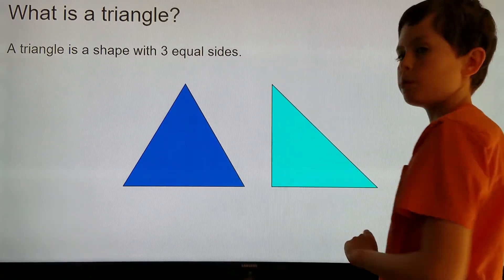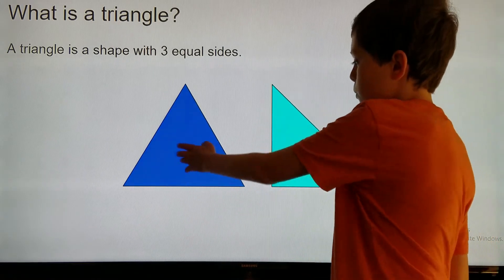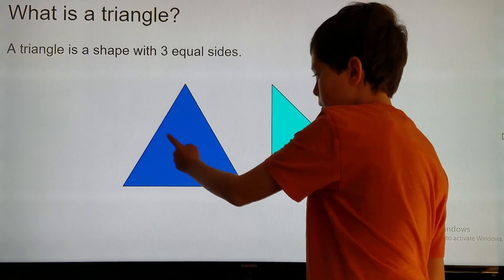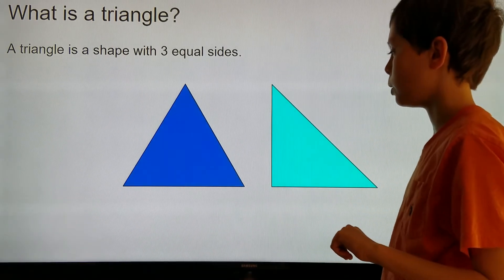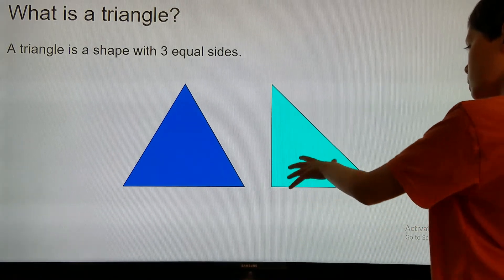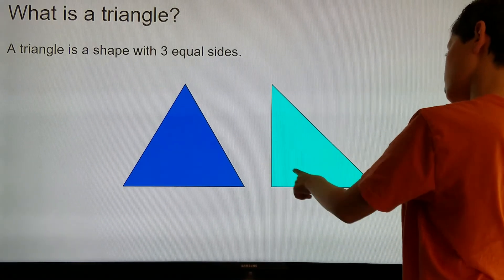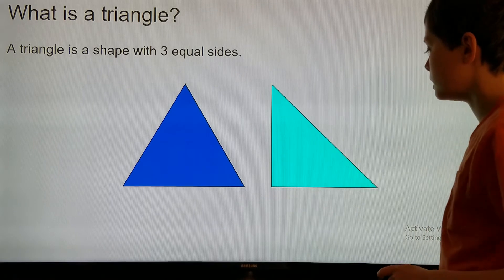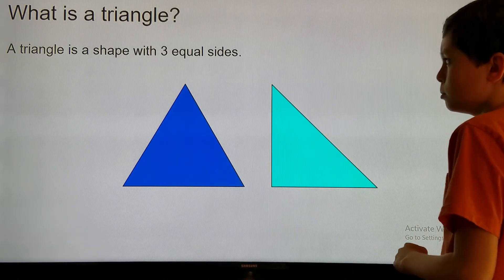There are two examples of a triangle here. This one's a triangle because it has one, two, three sides that are all the same length. This one's also a triangle because it has one, two, three sides that are the same.